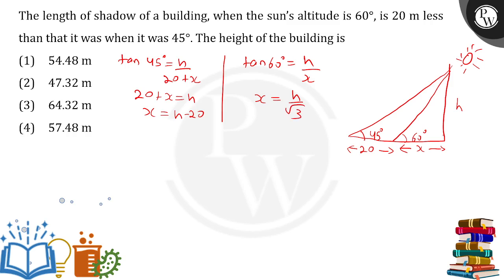From here I will be equating to h. h minus 20 equals h upon root 3. So taking this h on the other side, we have h times 1 minus 1 upon root 3 equals 20.